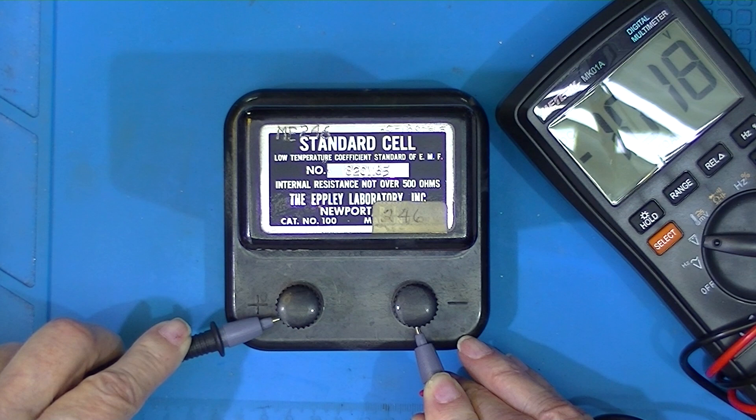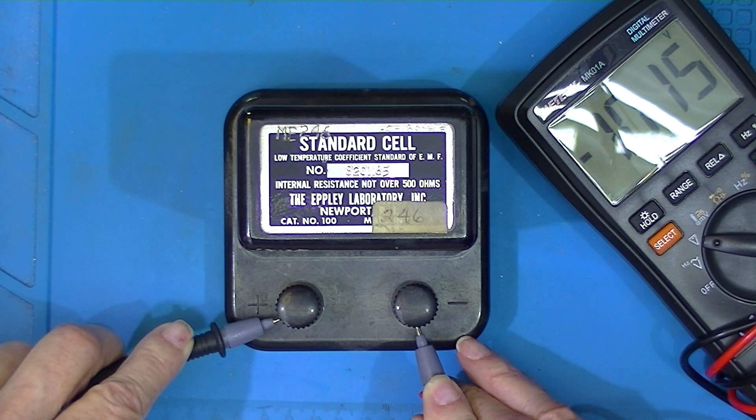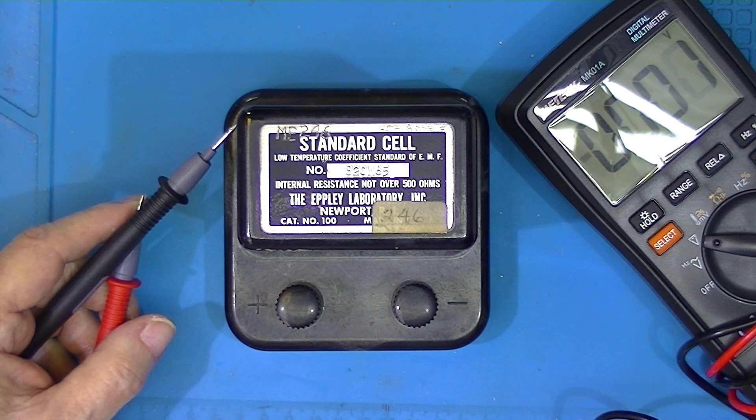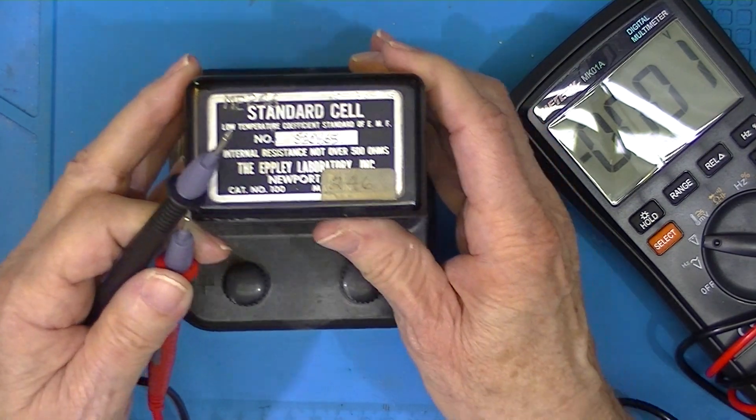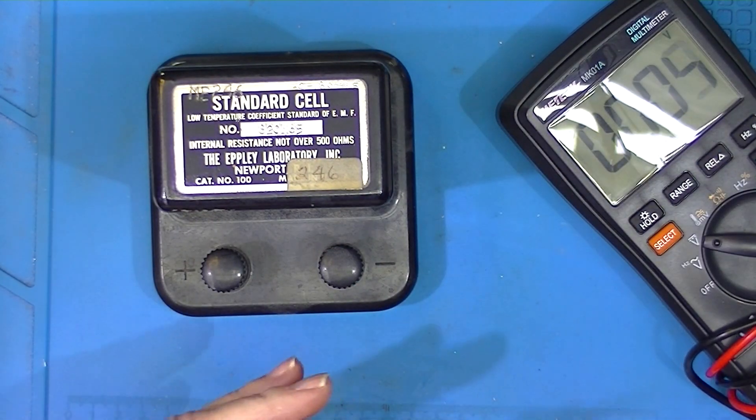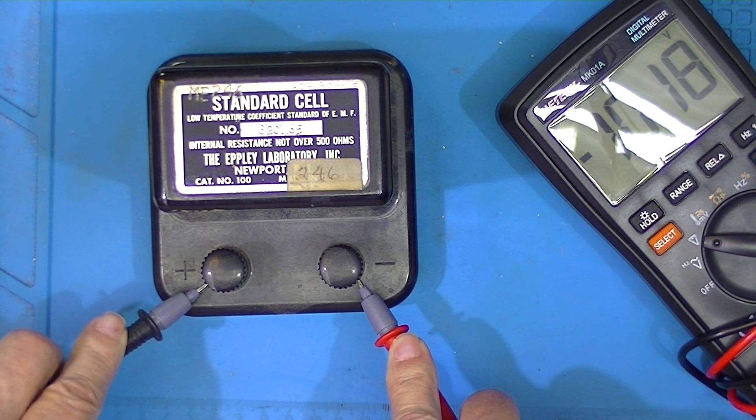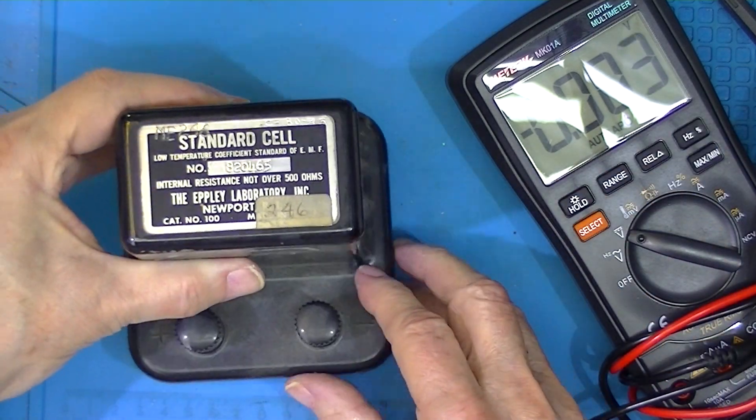Well look at that, 1.018. And when this was the standard, it produced 1.0180. So it's still to this day better than the average $30 digital meter. And I don't know what these cost.